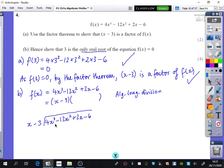So let's quickly do this division. We've got 4x cubed divided by x, which is 4x squared multiplied by 4x squared. So we get 4x cubed minus 12x squared. So you get 0x squared and you bring down the 2x.